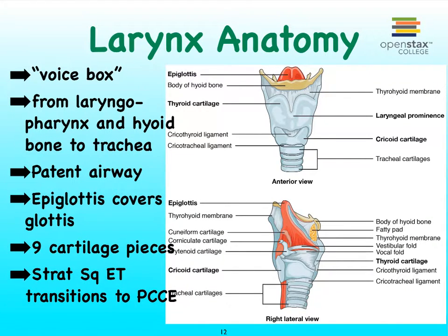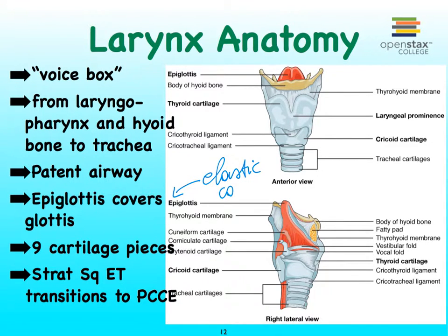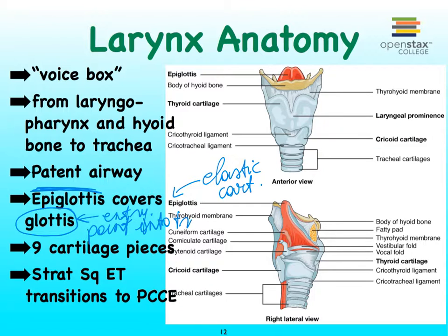That brings us to the larynx, because associated with the larynx we see the epiglottis, shown here in red. The red is not indicating vascularization — in fact, the epiglottis is made up of elastic cartilage, so it's a very springy yet still stiff structure. It can close off the entrance of the trachea when we begin the swallowing reflex. That entrance point we refer to as the glottis, so the epiglottis sits on top of the glottis and covers it — the glottis being the entry point into the trachea.